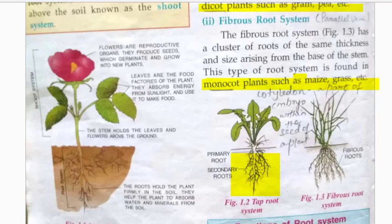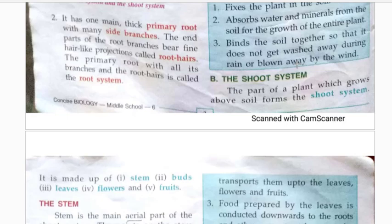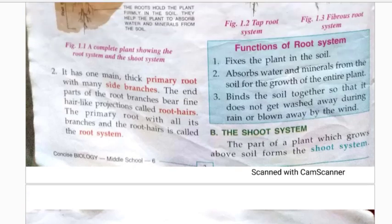The root system has three main functions. First, it absorbs water and minerals from the soil, which are essential for the growth of the plant. Second, it helps fix the plant firmly in the soil. Third, roots bind the soil together so that the soil does not get washed away by water or blown away by the wind.